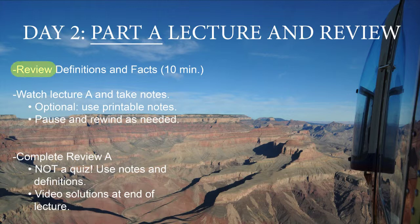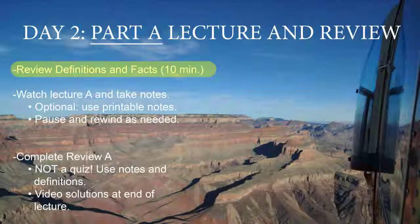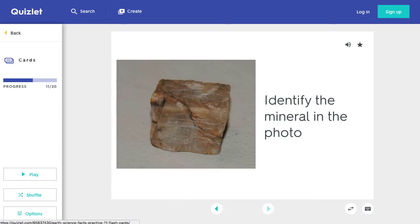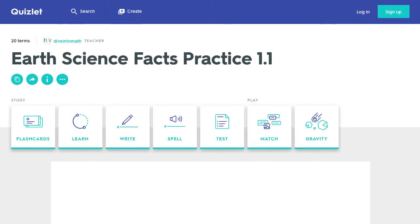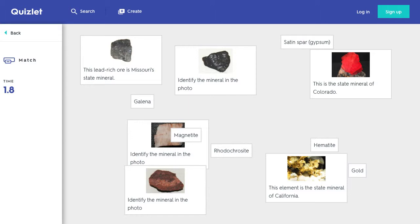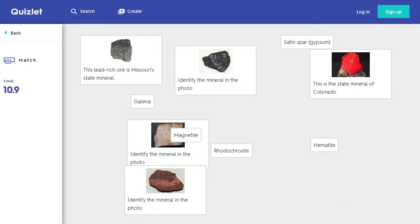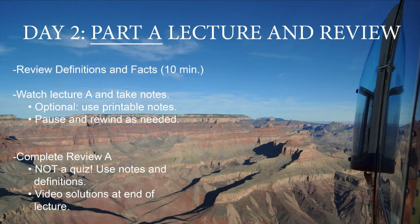About 10 minutes is what you want to spend reviewing definitions, rules, and facts. You can use your online flashcards or the methods provided in the course — just flip through each one time. You don't need to memorize them right now, though obviously as you go over them you will start to. You can also click the back button and see different study methods or games, like Match, where you slide a term like 'Gold' on top of the right image and it disappears — and there's a timer too. After about 10 minutes, go ahead and watch your first lecture — Lecture A — and take notes.